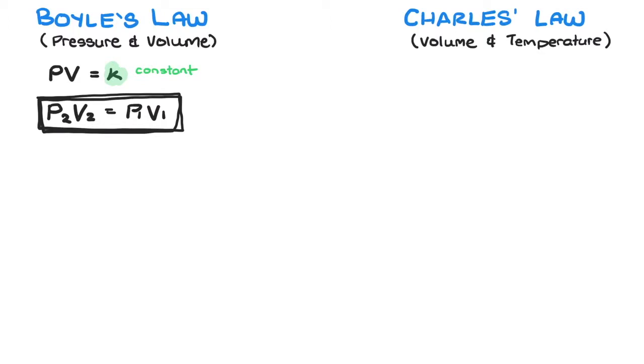Charles then showed us that there is a directly proportional relationship between volume and temperature as long as pressure is constant. So if volume is doubled, temperature is also doubled, kind of like a ratio.